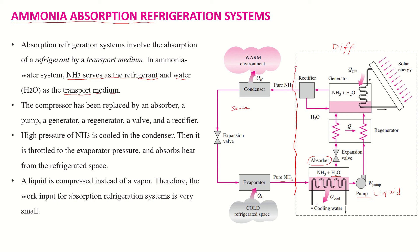We need to cool down this solution using cooling water circulation. You can see here that cooling water is circulated through these coils. This is done to reduce the temperature of the solution, because as we reduce the temperature, a greater amount of ammonia is absorbed. The function of the absorber is to absorb ammonia vapors into water.